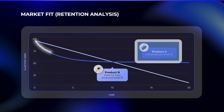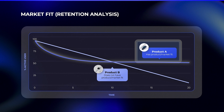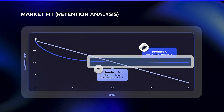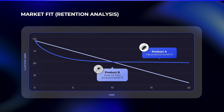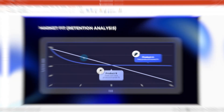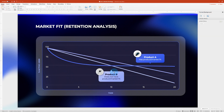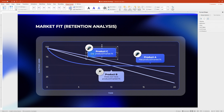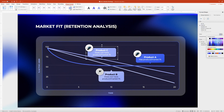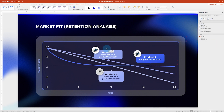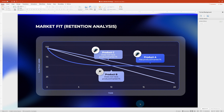Product A experienced a dip in active users in the beginning, but the number soon stabilized into a steady count of active users. If there are more products in the product mix, you can always add their trajectories as additional lines on this graph.